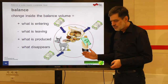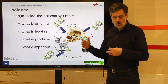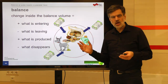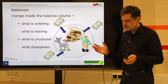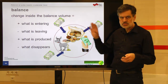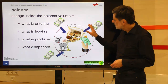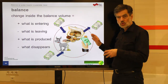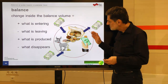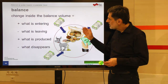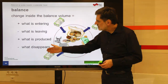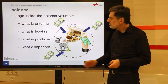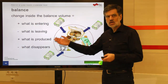Now we know how a balance works. The method for using one is: first, set up the balance volume — define the system you want to look at. Then describe the five contributions: change within, entering, leaving, produced, and disappearing. Generally, one of those contributions is unknown.